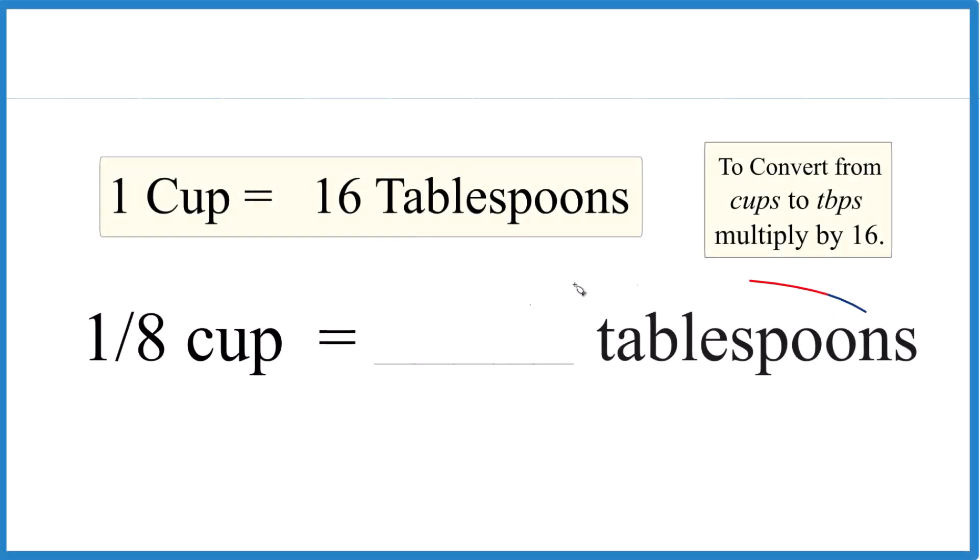If you need to figure out how many tablespoons are in one-eighth of a cup, here's how you can do that. You need to memorize that one cup equals 16 tablespoons.